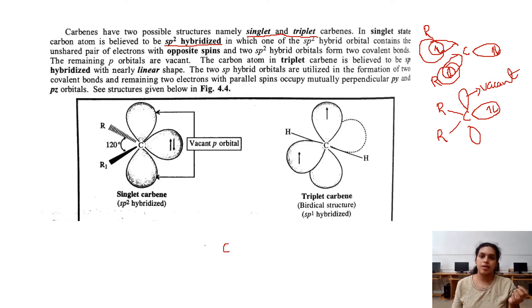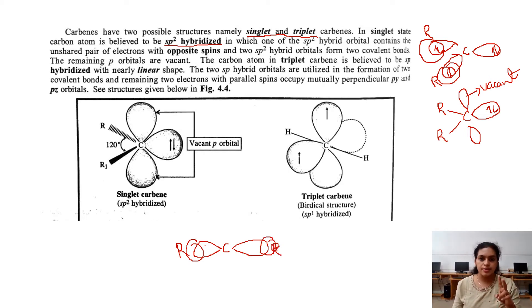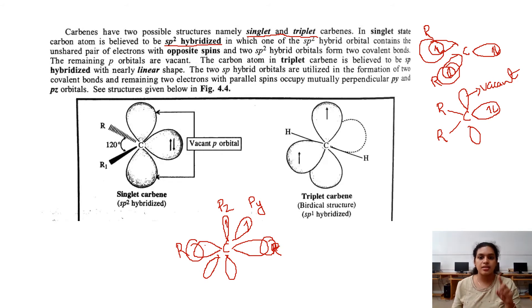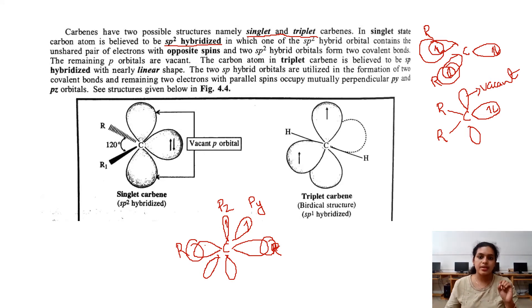In triplet carbene, the carbon atom is sp hybridized, so the bond angle is 180 degrees. It forms sigma bonds with alkyl groups or hydrogen. There are 2 unhybridized orbitals — pz and py — and the 2 carbene electrons reside in these separate orbitals in an unpaired state with parallel spin, occupying two different orbitals.